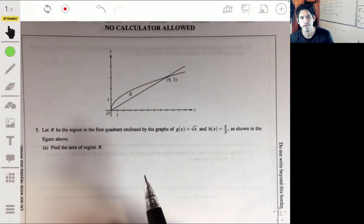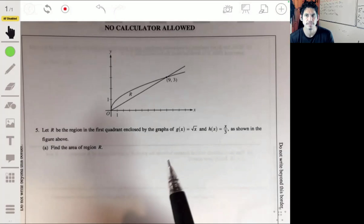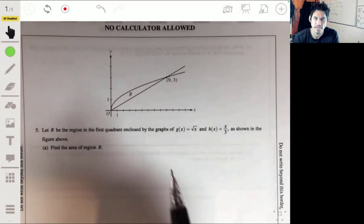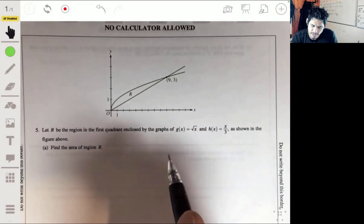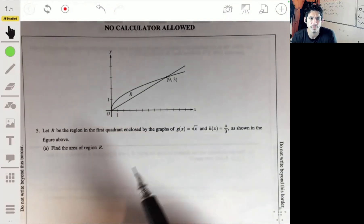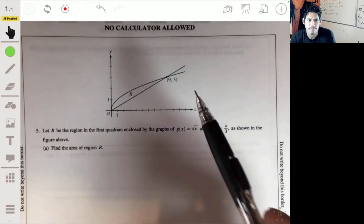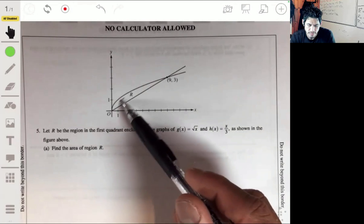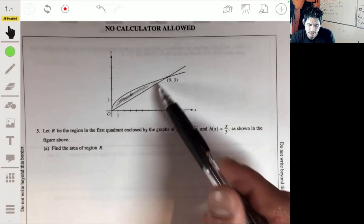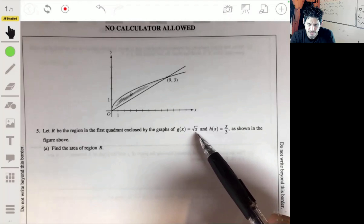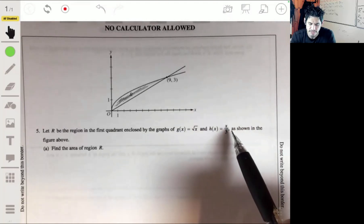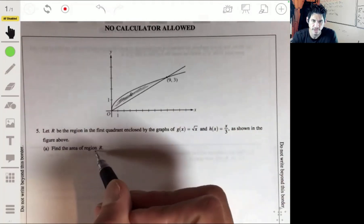All right, so let's look at problem five from the free response section from the 2015 AP Calculus AB exam. We have the region R, which is the part enclosed by these two graphs: g of x equals the square root of x and h of x equals x over 3. Find the area of region R.